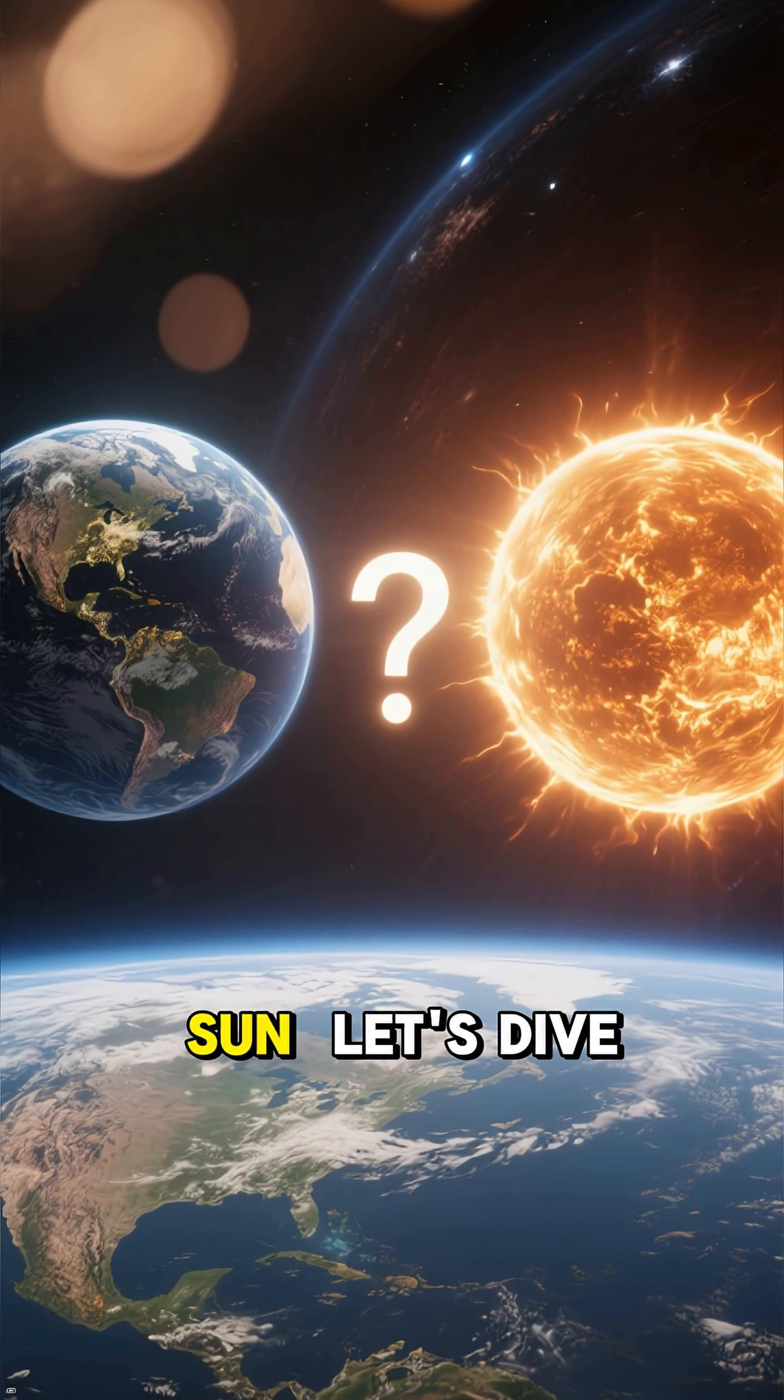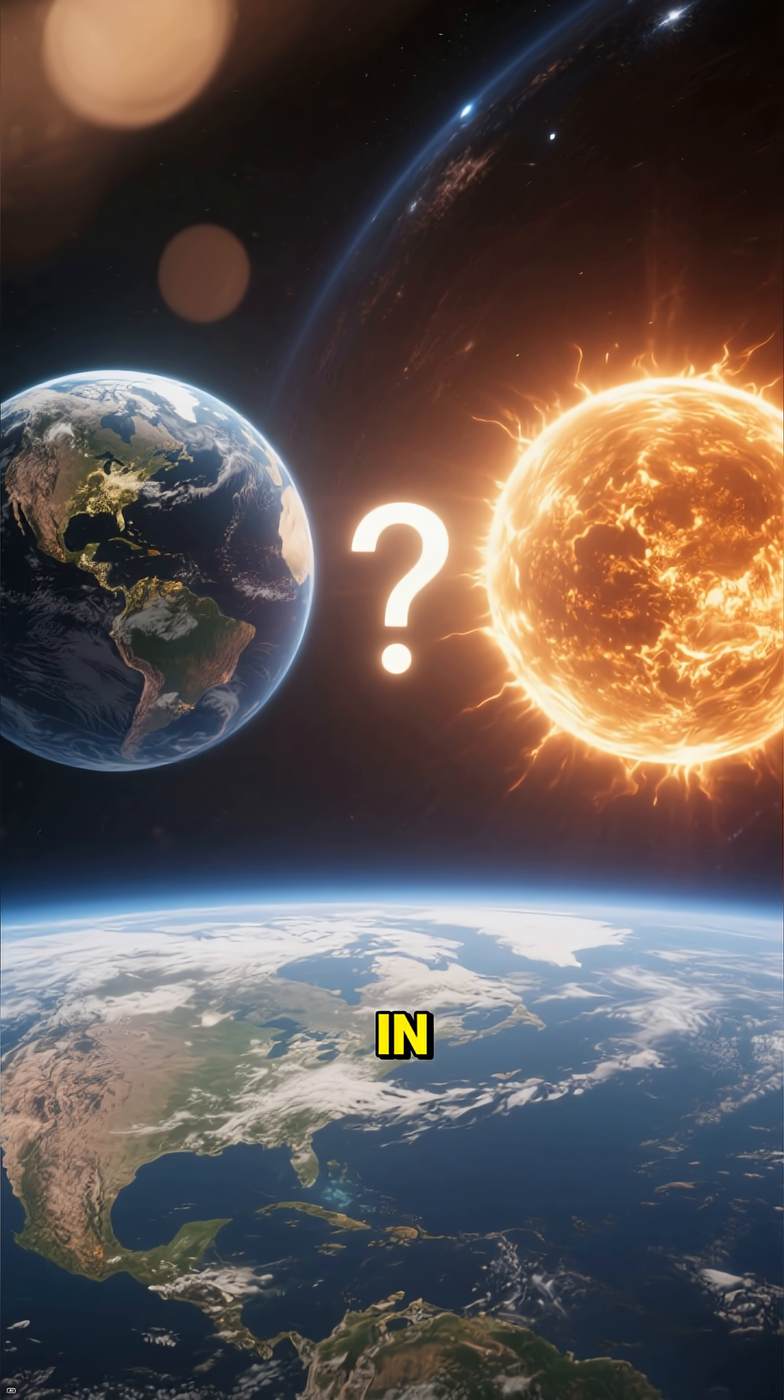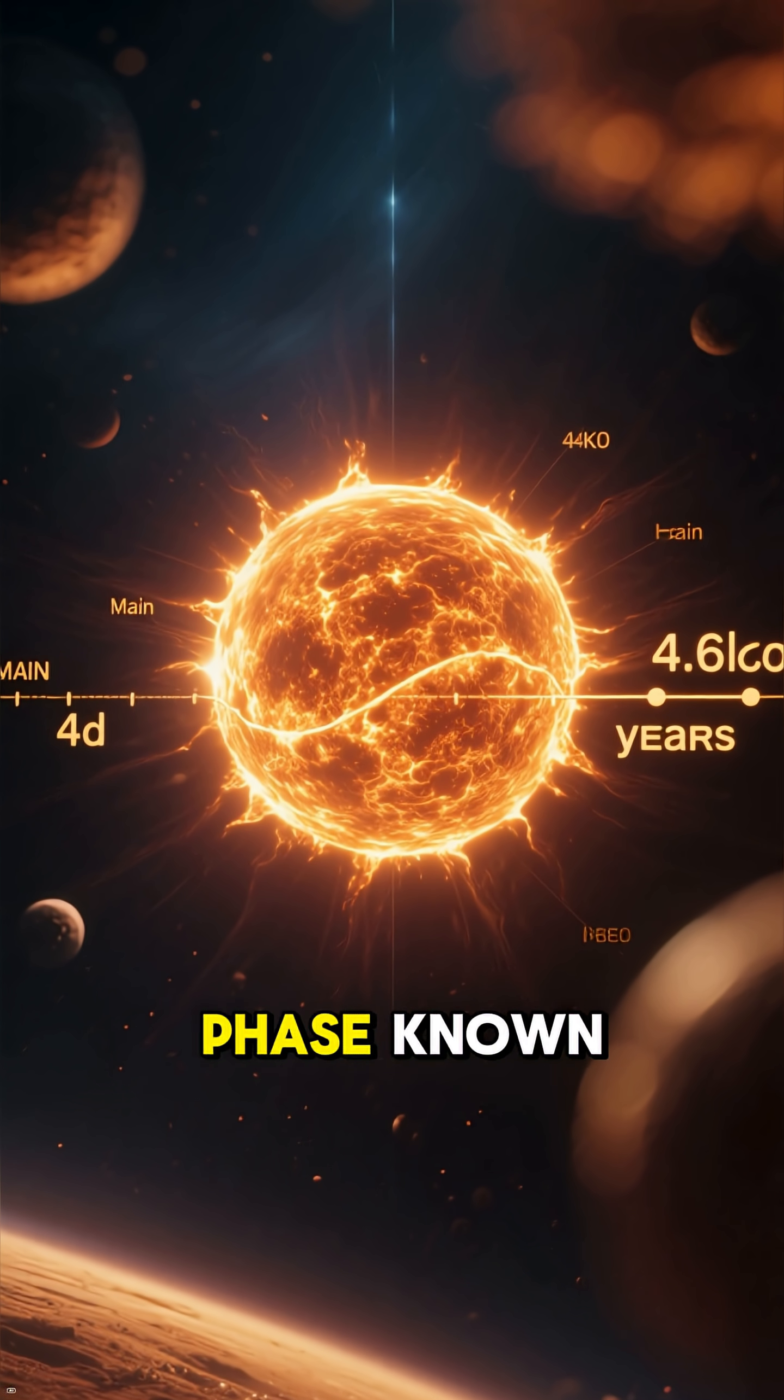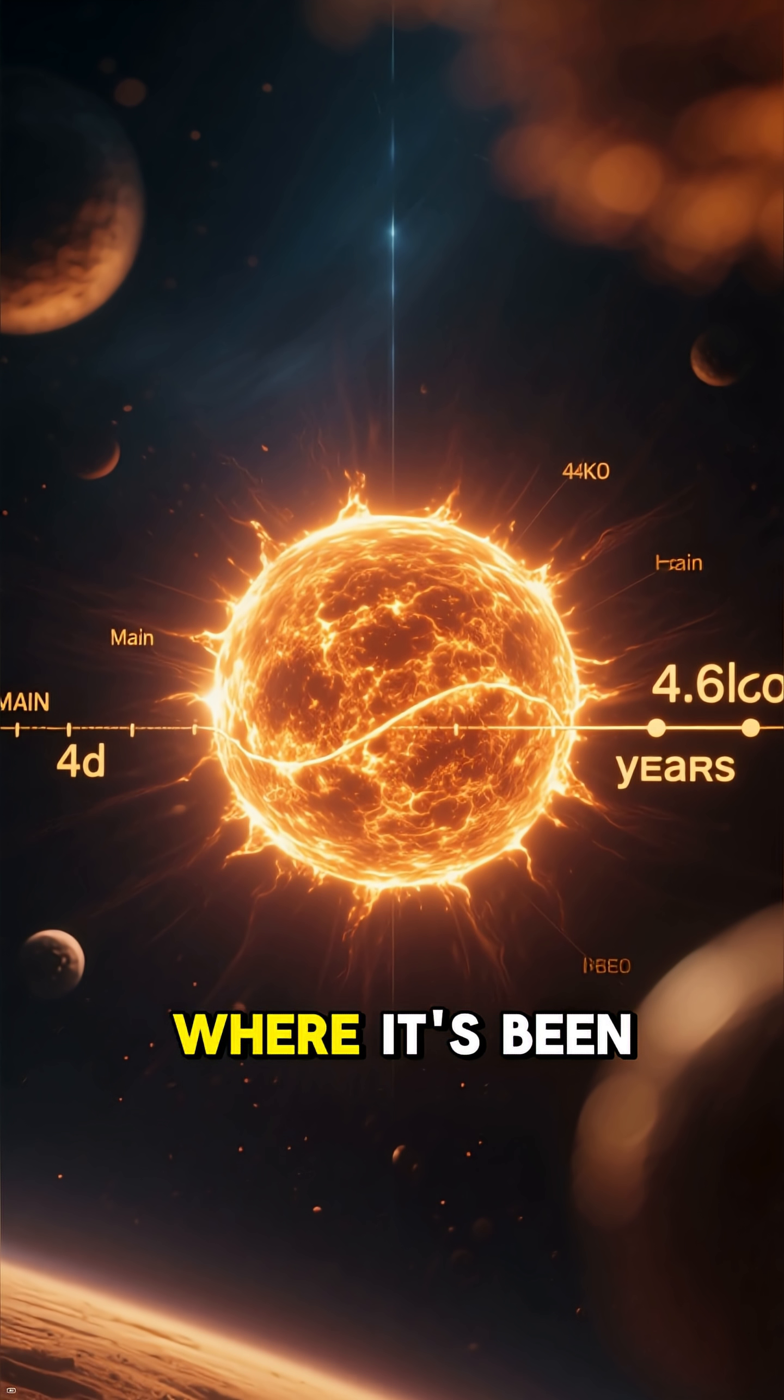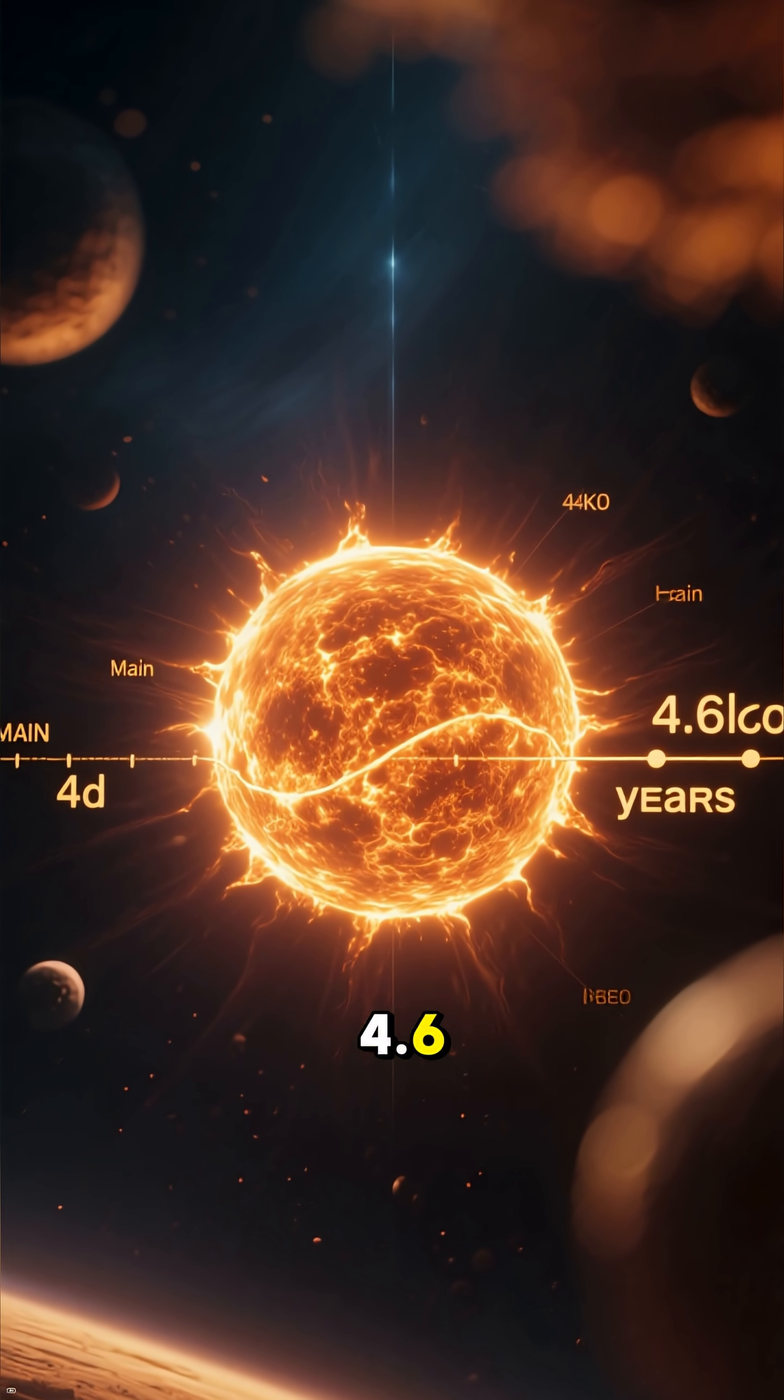Will Earth survive the death of the Sun? Let's dive in. The Sun is currently in its stable phase known as the main sequence, where it's been for about 4.6 billion years.